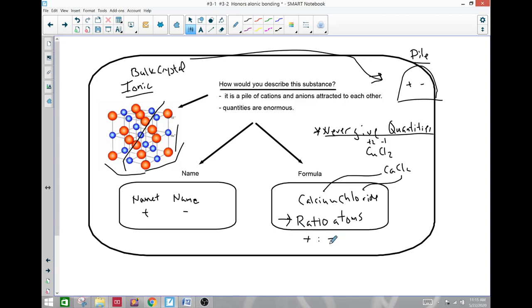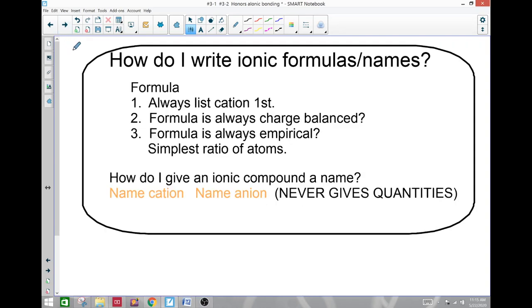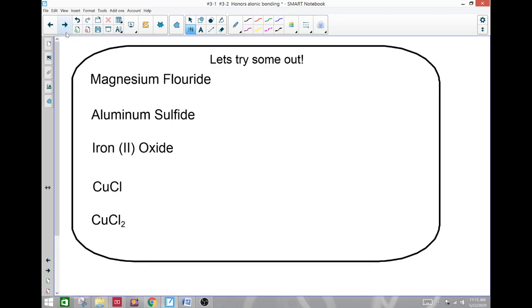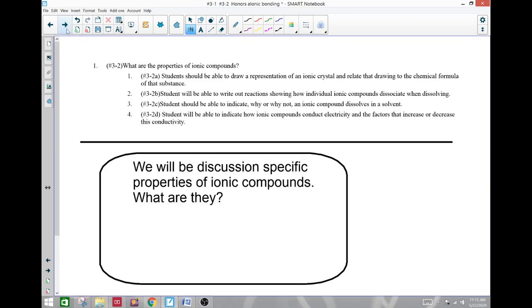So it just gives the ratio of atoms, the ratio of cations to anions. There's a name for that. It's called the empirical formula, the simplest ratio of atoms. So again, how do I write out names and formulas? And more practice. We'll end our discussion on the first part of ionic compounds.